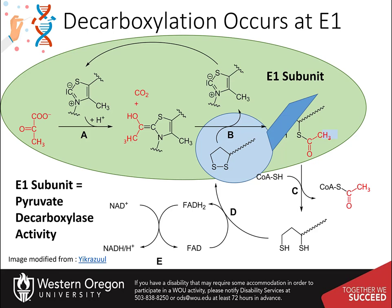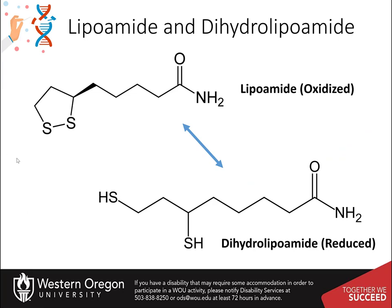During the reaction mechanism of pyruvate dehydrogenase, pyruvate and thiamine pyrophosphate are bound by the E1 subunit of the PDH complex. The thiazolium ring of thiamine pyrophosphate is in a zwitterionic form, and the anionic C2 carbon performs a nucleophilic attack on the C2 ketone carbonyl of pyruvate. The resulting intermediate undergoes decarboxylation, leaving a 2-carbon intermediate attached to the thiamine pyrophosphate. At this point, a second cofactor, lipoamide, becomes involved in the reaction mechanism.